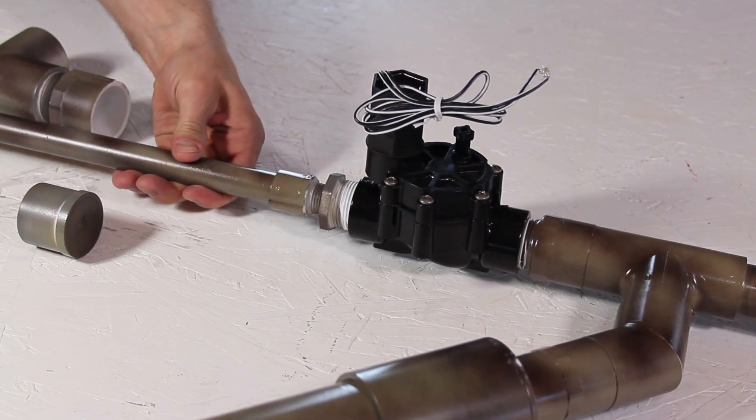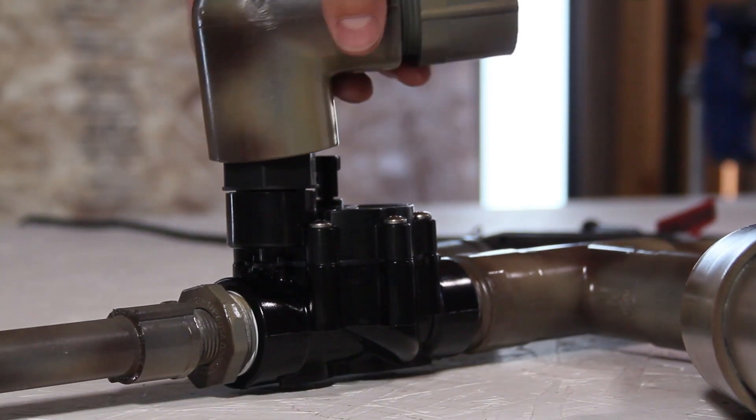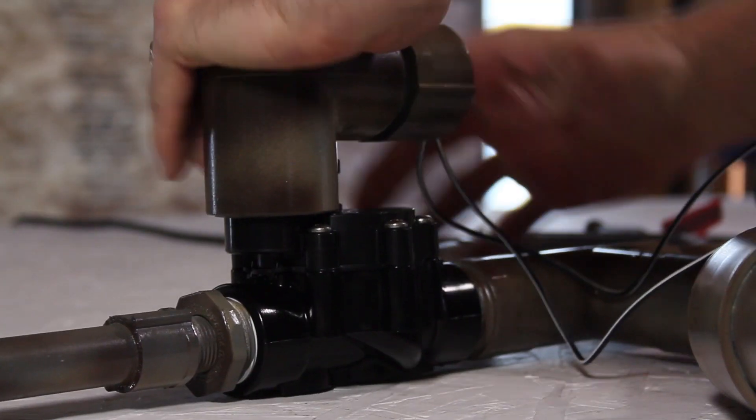Let's add the inline sprinkler valve next, and then screw the barrel onto that. The valve wires get pulled through the 90 degree joint, and the elbow presses nicely onto the solenoid casing.